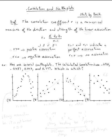The topic is correlation and scatterplots. So let's read the definition. The correlation coefficient r is a numerical measure of the direction and strength of the linear association.